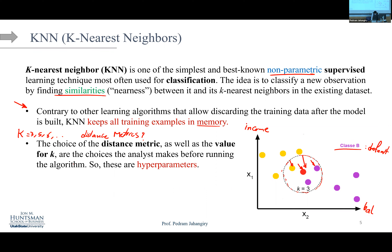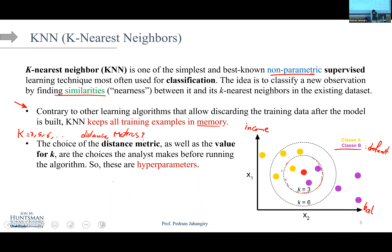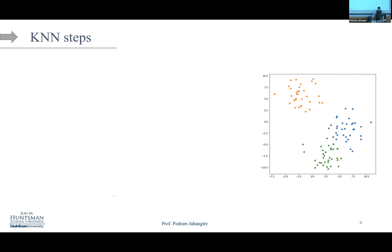The choice of distance metric as well as the value of K are decisions you must make before running the algorithm — these are hyper parameters. Remember: there are no parameters in KNN, but there are two hyper parameters: K and the distance metric. You can see how sensitive the output is to K. In this example, if K equals three the answer is 'default'; if K equals six the answer is 'no default.'